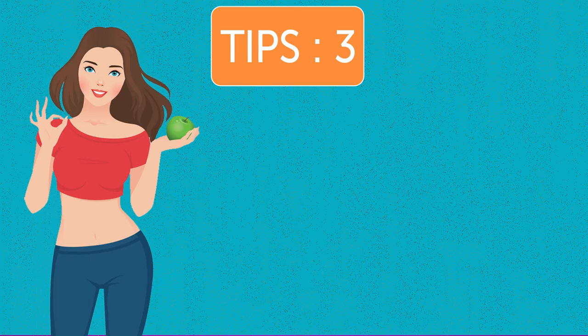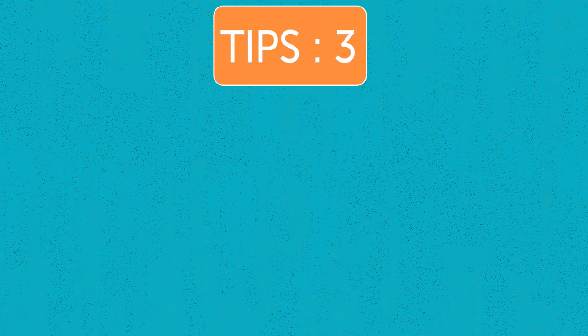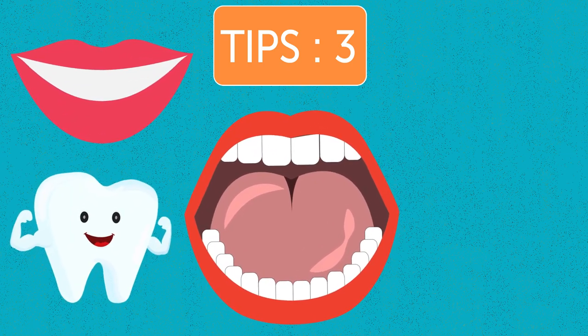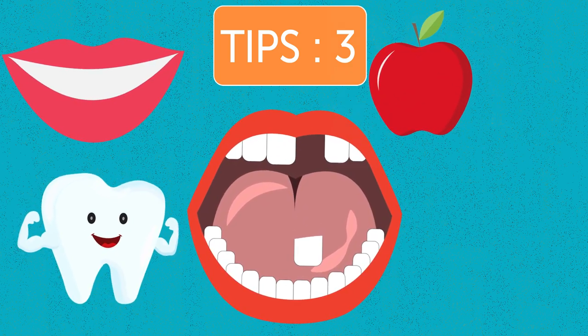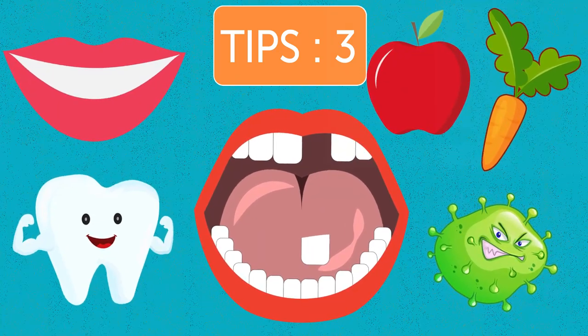Tip 3: Eat Fruits and Vegetables. A hydrated mouth is a healthy mouth. Your teeth are at high risk of decaying if your mouth is dry. Eating fruits and vegetables helps to increase saliva flow and naturally remove some of the plaque and bacteria.